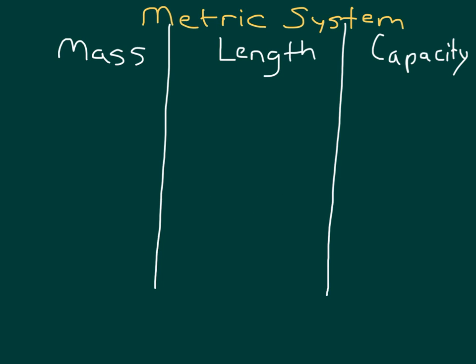We have worked with the metric system where we have talked about the mass or the weight of an object, the length of an object, and we've also talked about capacity — or how much can go inside, for instance how much liquid is within a bottle. The units for mass within the metric system include grams and kilograms.